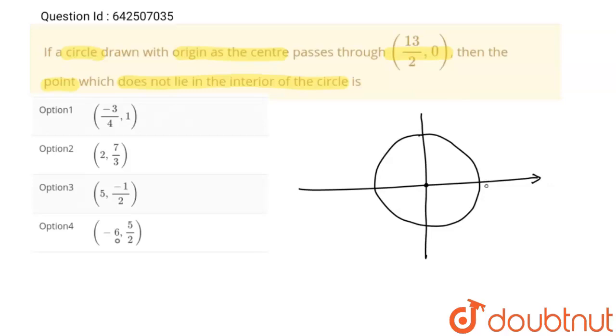So this is the point which is (13/2, 0). This says that the radius of this circle is 13/2. Then which of the following point does not lie in the interior of the circle? Which of the following points among these four points will not lie inside the circle?